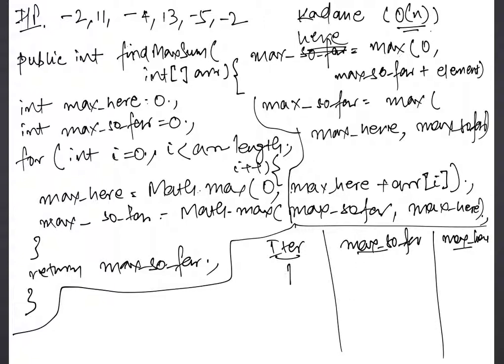So in the first iteration we have minus 2, so max_here is the bigger of 0 or minus 2, which is 0 of course, and max_so_far still remains 0. In the second iteration we get 11, so max_here becomes 11, and max_so_far becomes 11.